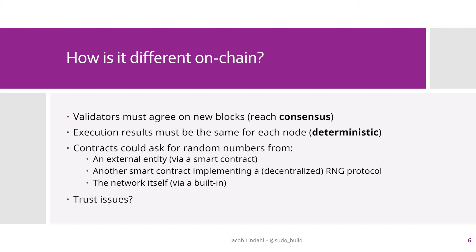Validators must agree on new blocks — they have to reach consensus. That includes execution results, which means execution results have to be the same for each node. That property is called being deterministic. This means we can't just ask each node to generate a random number, because they'll all come up with different results. There has to be some way for all nodes to agree on what the random number is without knowing it beforehand, because otherwise it would be predictable. You can start to see where this becomes a really difficult problem.